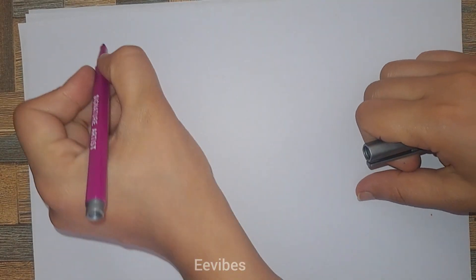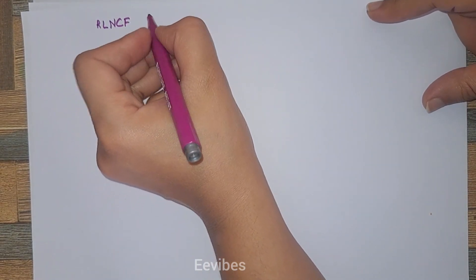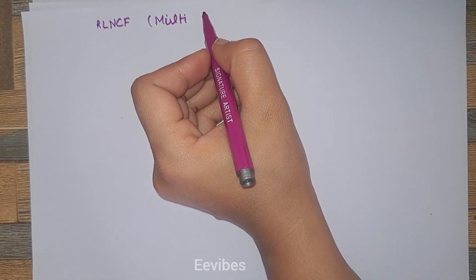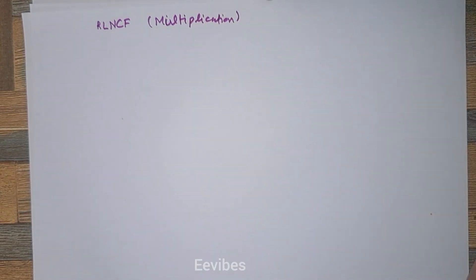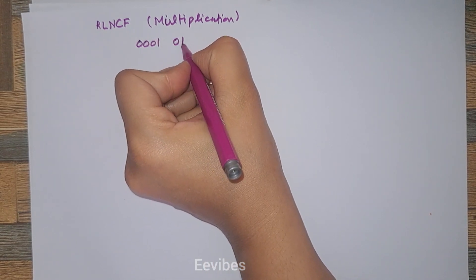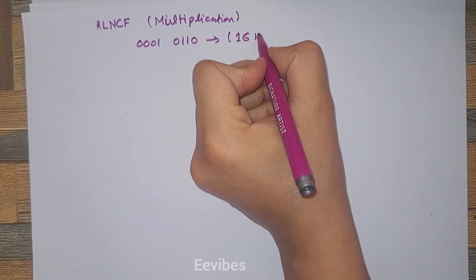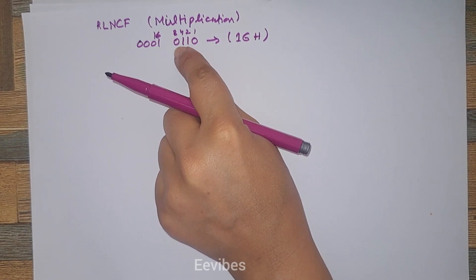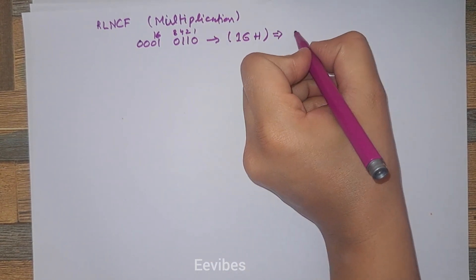Now let's consider the second rotate instruction: rotate left not with the carry. In this case, it will perform the multiplication by the factor of 2. How many times we perform the rotation results in multiplication with the power of 2. Let's say we have the number 0001 0110. Let's find its decimal equivalent — this is 16 in hex, and in decimal: 16 plus 4 plus 2 is equal to 22. So its decimal equivalent is 22.